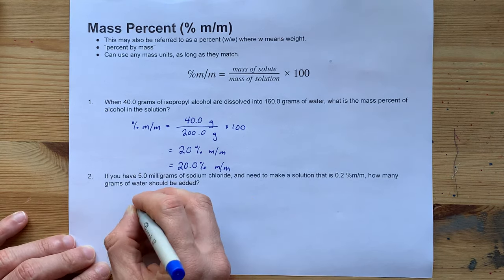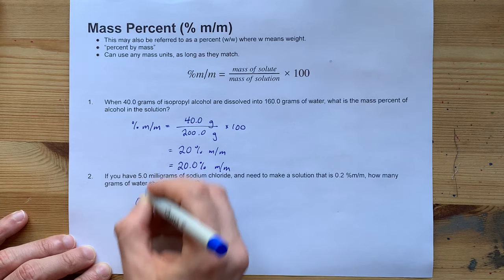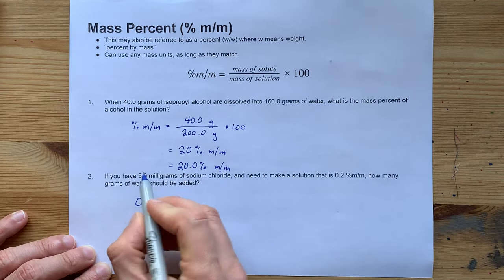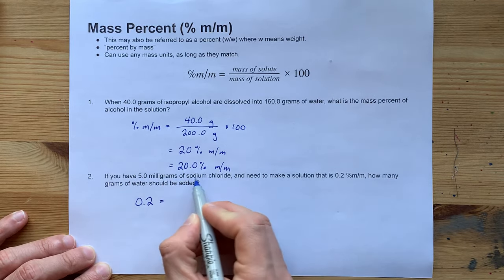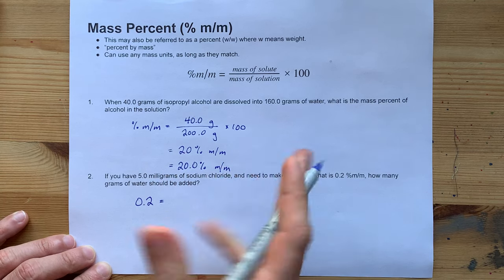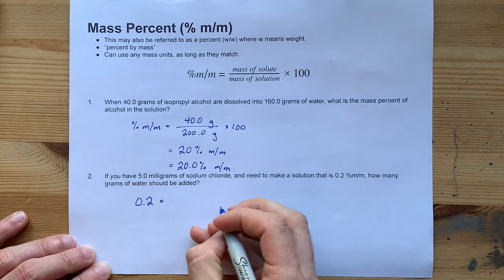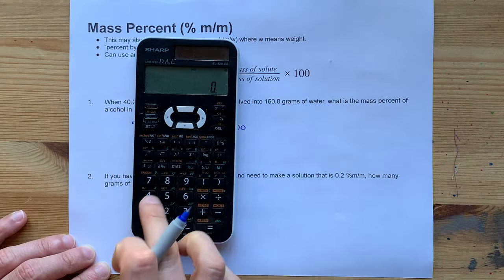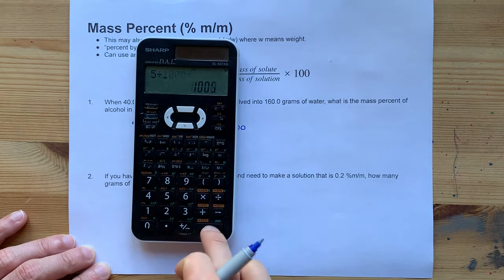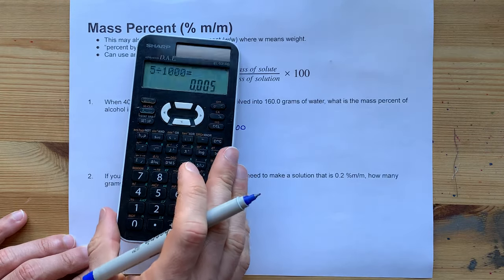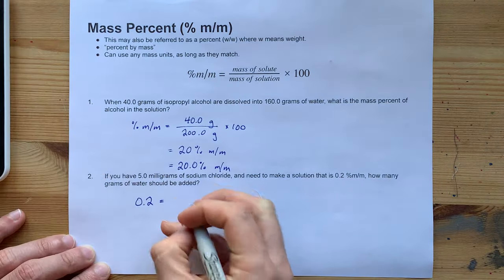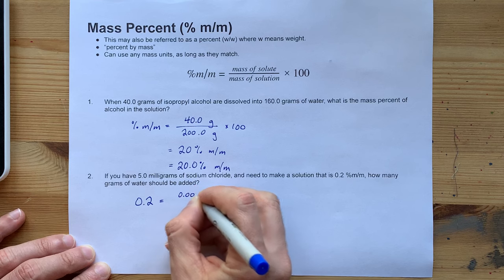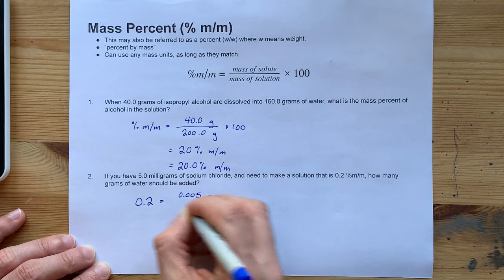So that 0.2 is my percent m over m. I know I have five milligrams of sodium chloride. Now I'm going to convert that to grams. Five milligrams, you can convert that to grams by dividing by a thousand, because there are a thousand milligrams in a gram. That gives me 0.005 grams of sodium chloride.